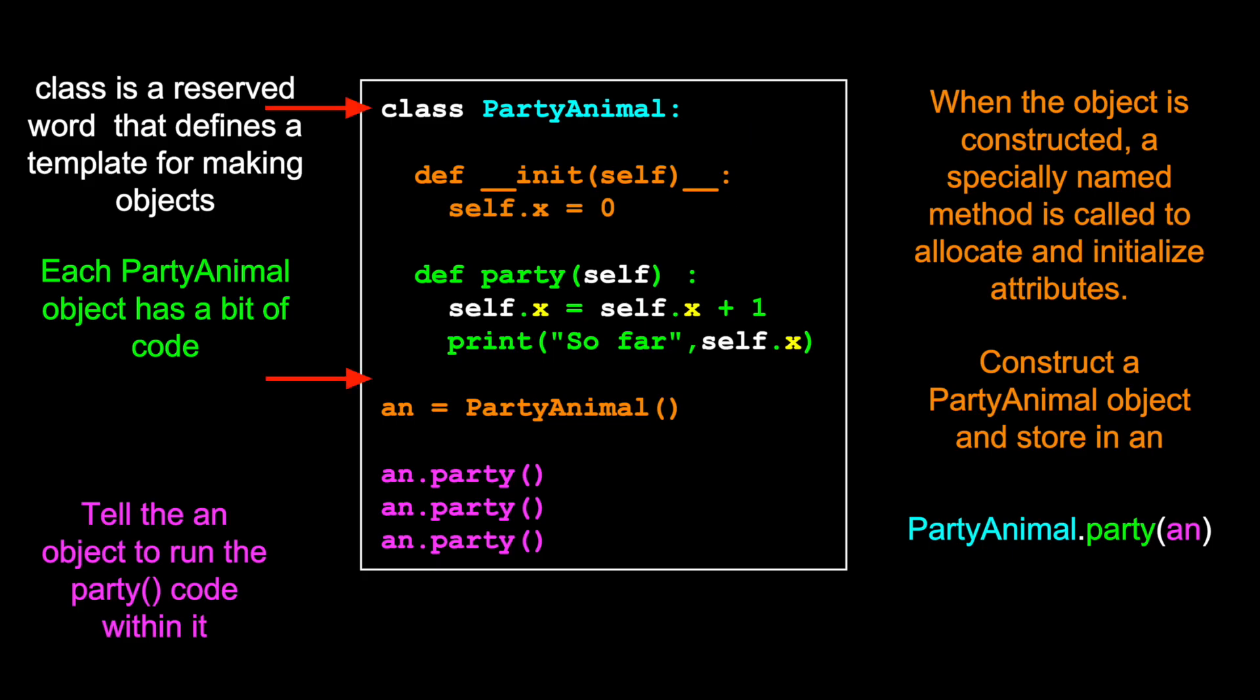So this is not actually executing any code. It's sort of remembering the template, defining the class party animal. This is what we call constructing. We're constructing, using the party animal template or class, we are making a party animal. And then once we make that, we stick it in the variable an. And then we're going to call this party method three times, one, two, three.